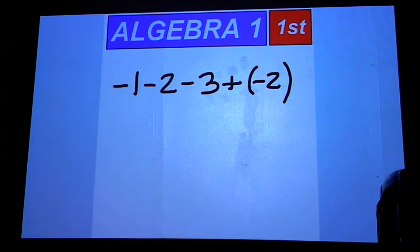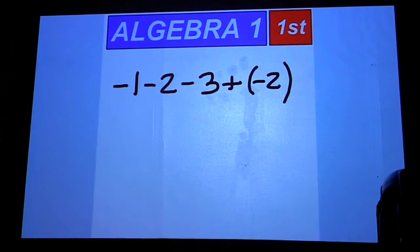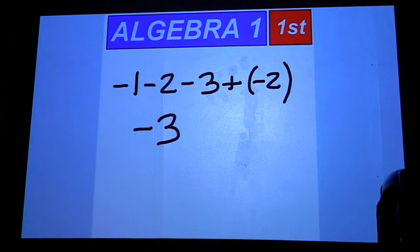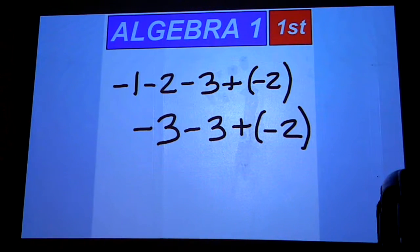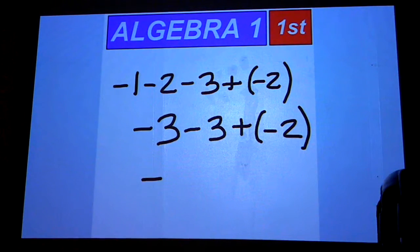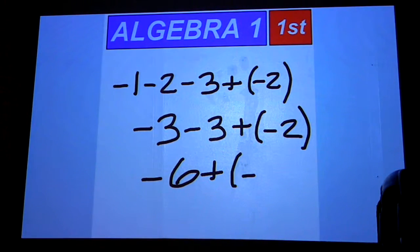Negative 1 minus 2: you're at negative 1 and the temperature is dropping 2 degrees, so it goes down to negative 3. And then you're going to subtract 3 from that. You're at negative 3 and the temperature goes down another 3 degrees. You're now at negative 6, plus a negative...